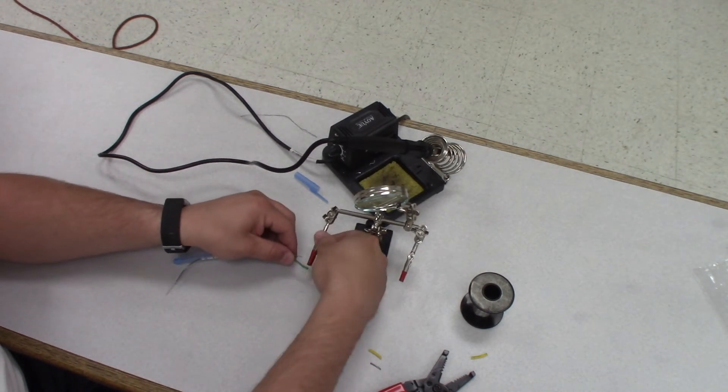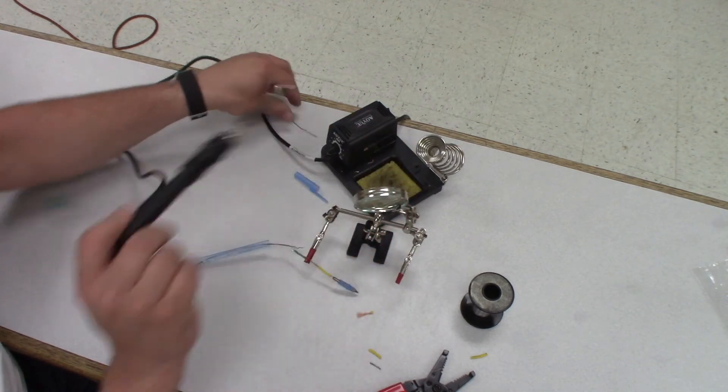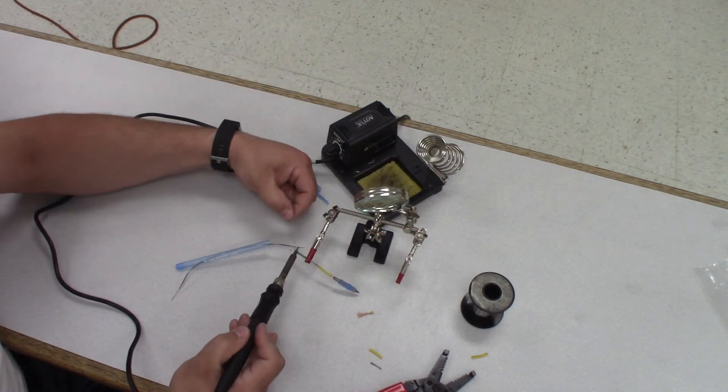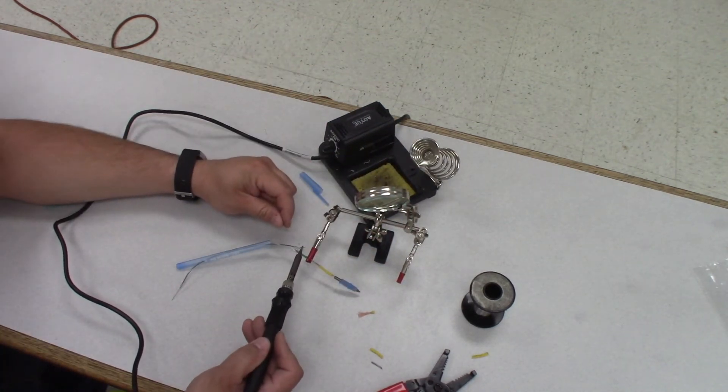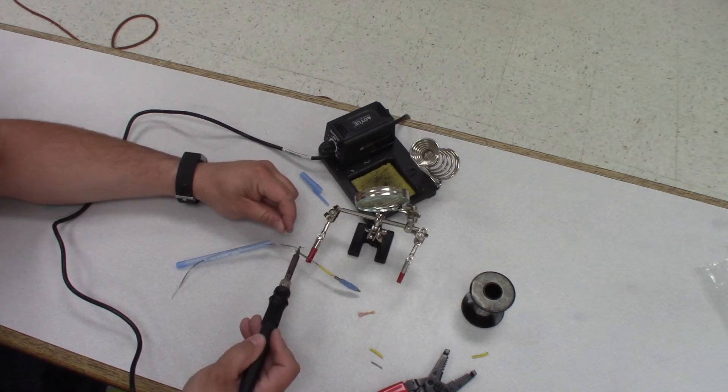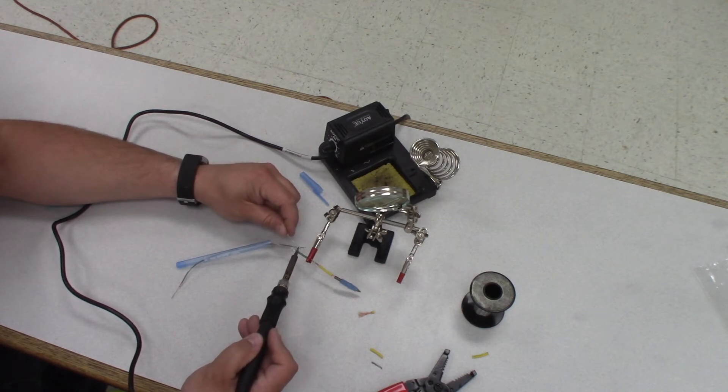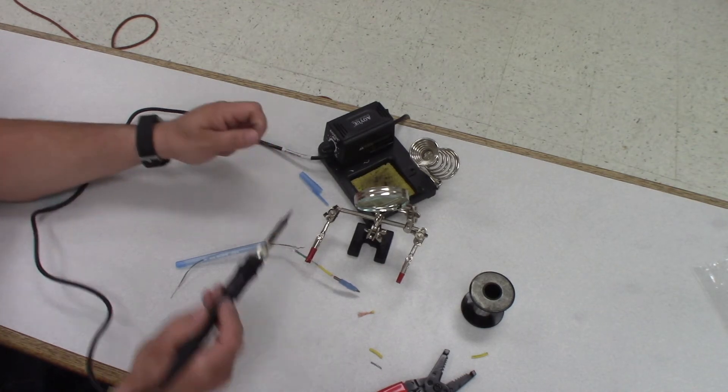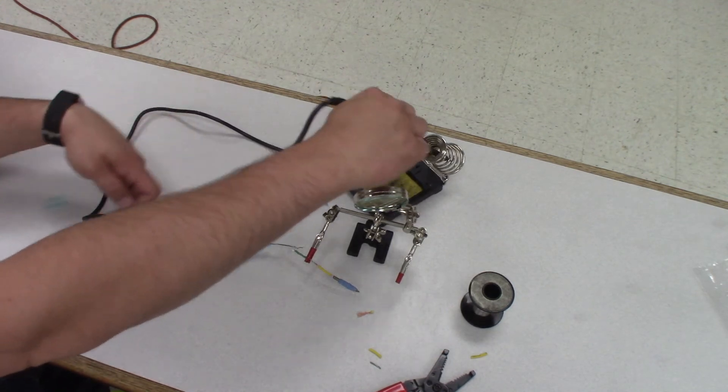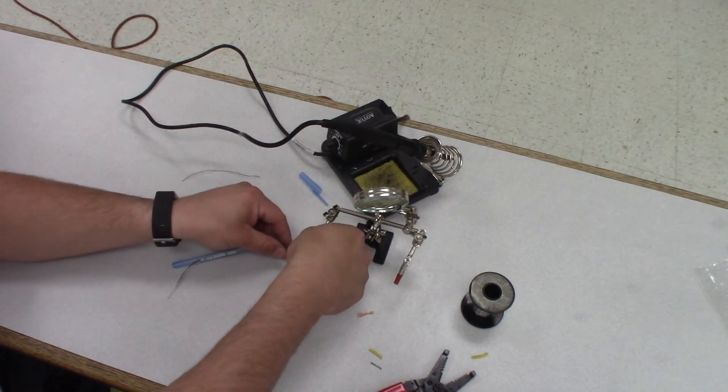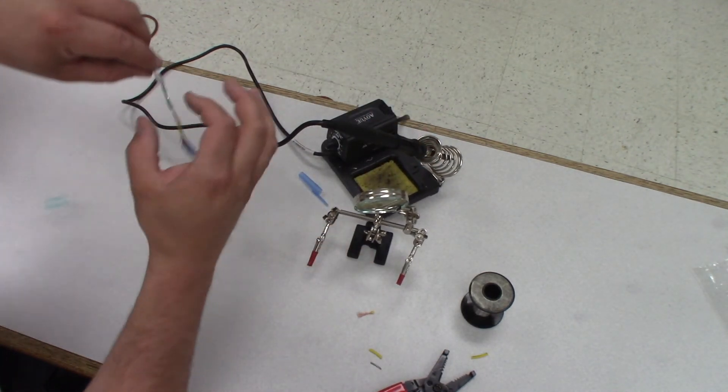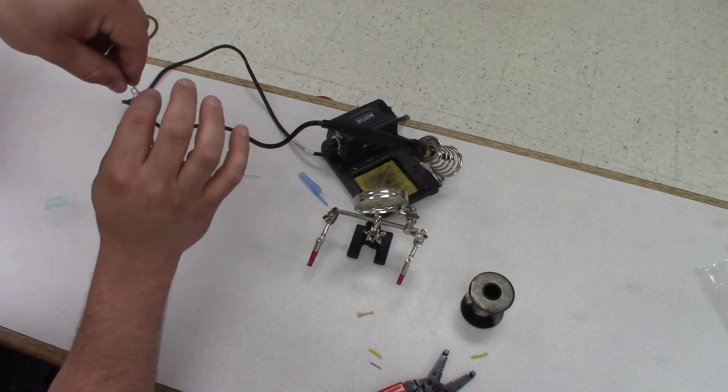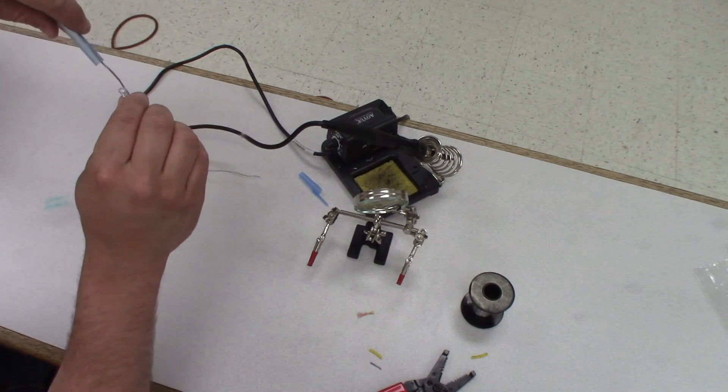Then we're going to go back and solder them. Now we don't want to put a ton of heat in the LED so we want to do this with just a little bit of solder on there. Once we have them soldered together, the heat shrink here will help us keep from getting a short circuit. What we're going to do is push these legs together.